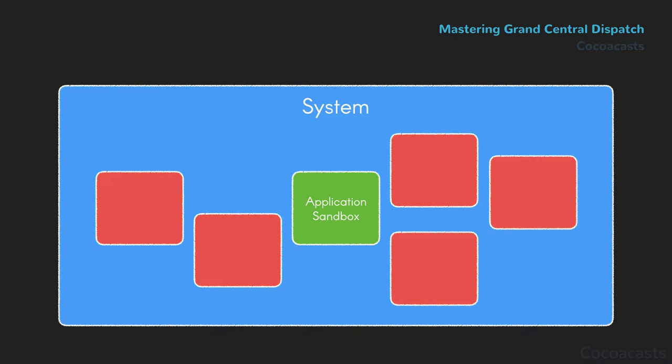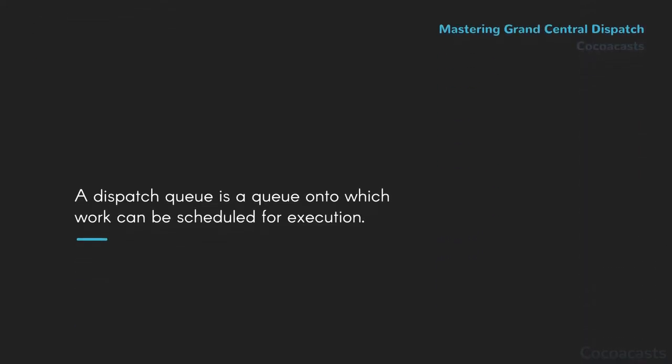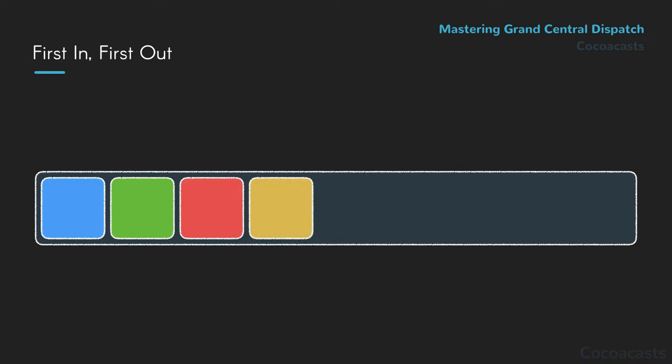Grand Central Dispatch allows applications to schedule work for execution through an easy-to-use API. It's the task of Grand Central Dispatch to decide when and how the scheduled work is executed. An application interacts with Grand Central Dispatch through dispatch queues. A dispatch queue is a queue onto which work can be scheduled for execution. A dispatch queue enqueues and dequeues work in FIFO order — first in, first out — meaning the work submitted to a dispatch queue is executed in the order in which it was submitted.